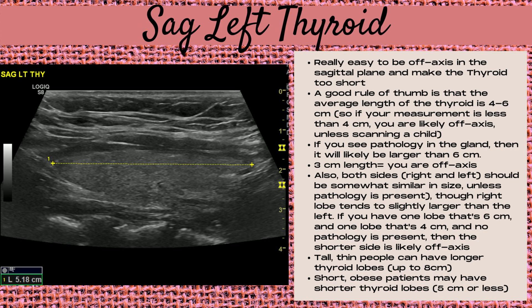When imaging the sagittal left or right thyroid lobe, it's easy to be off axis and make the thyroid too short. A good rule of thumb: the average thyroid length is four to six centimeters, so if your measurement is less than four centimeters you're likely off axis, unless scanning a child. If you see pathology, the gland is likely larger than six centimeters. Both sides should be somewhat similar in size, though the right lobe tends to be slightly larger. If one lobe is six centimeters and the other is four centimeters with no pathology, the shorter side is likely off axis. Tall thin people can have lobes up to eight centimeters; short obese patients may have lobes around five centimeters or less.